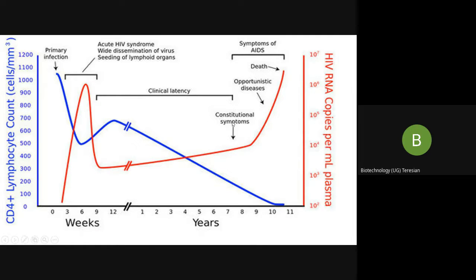Later on, constitutional symptoms appear and finally opportunistic diseases develop. This is the region where HIV is now known as AIDS — the virus has completely hijacked the body and every cell, making the patient prone to many other diseases such as pneumonia, tuberculosis, and cancers like Kaposi's sarcoma, ultimately leading to death if untreated.